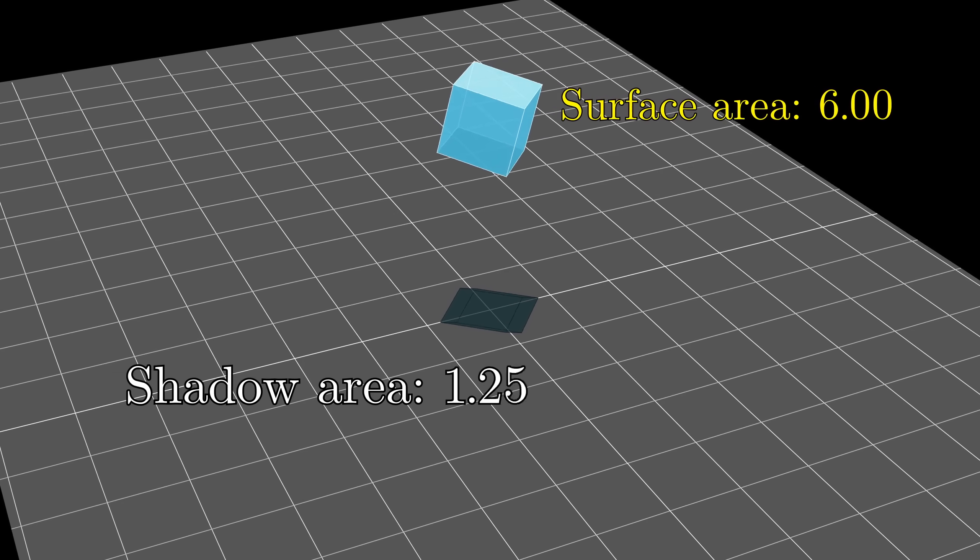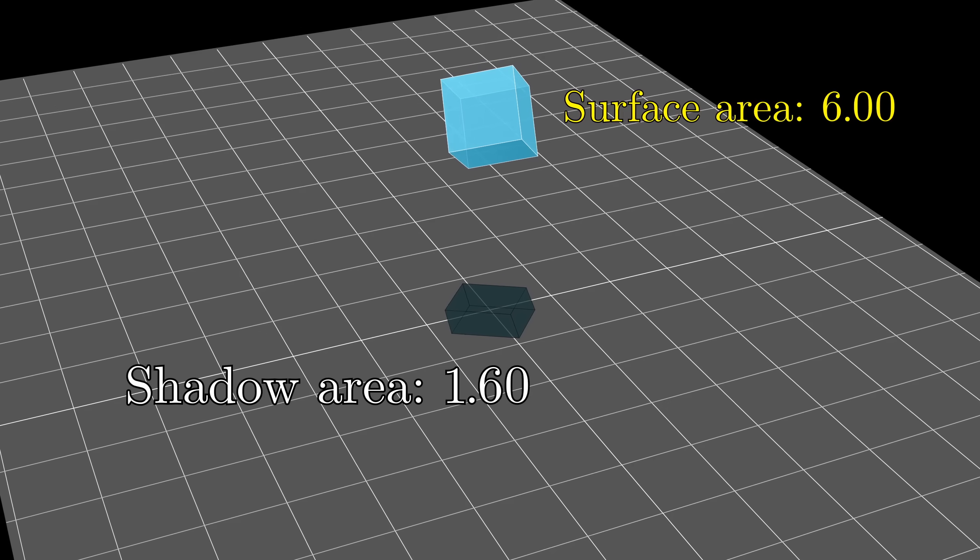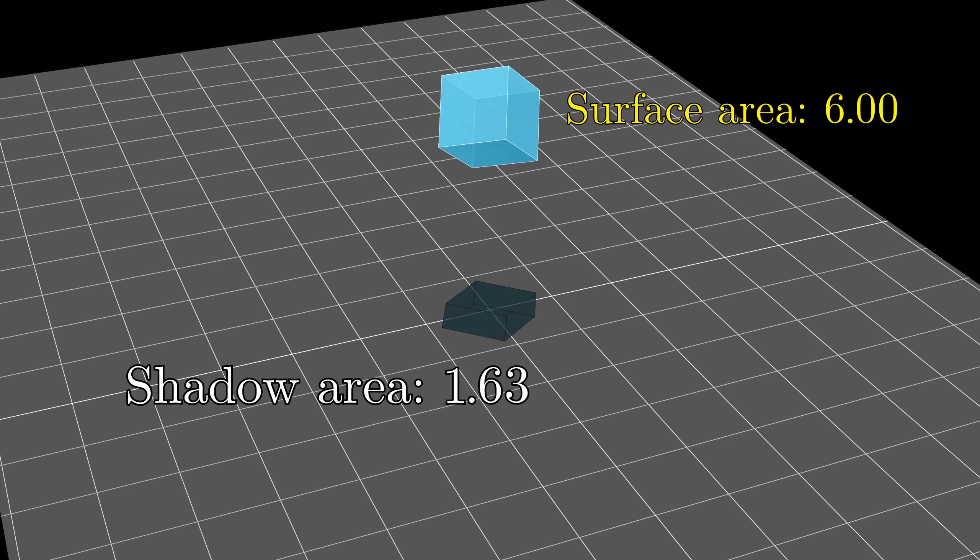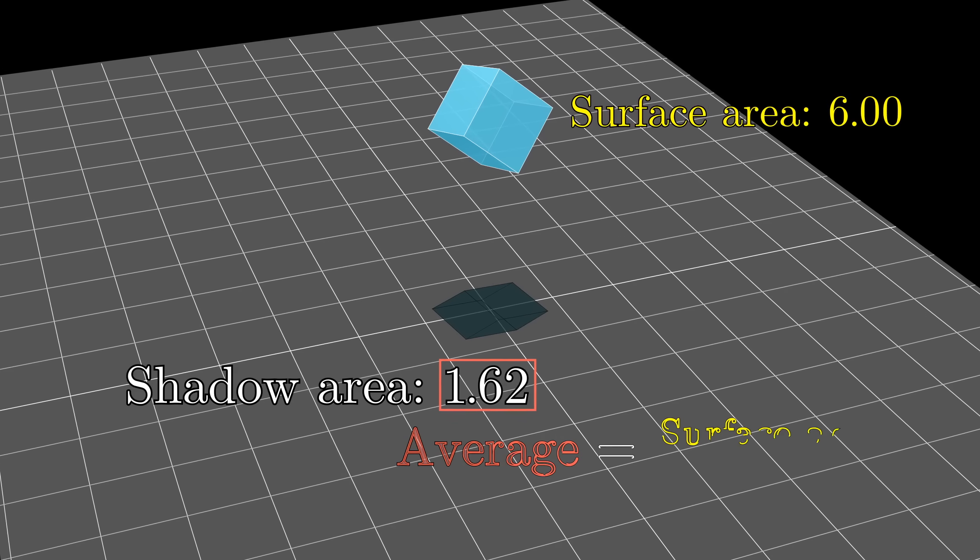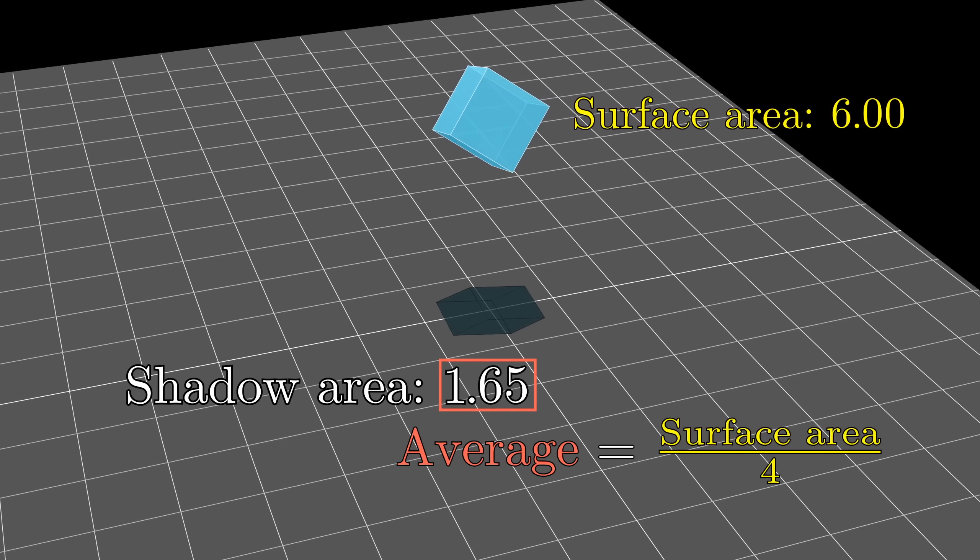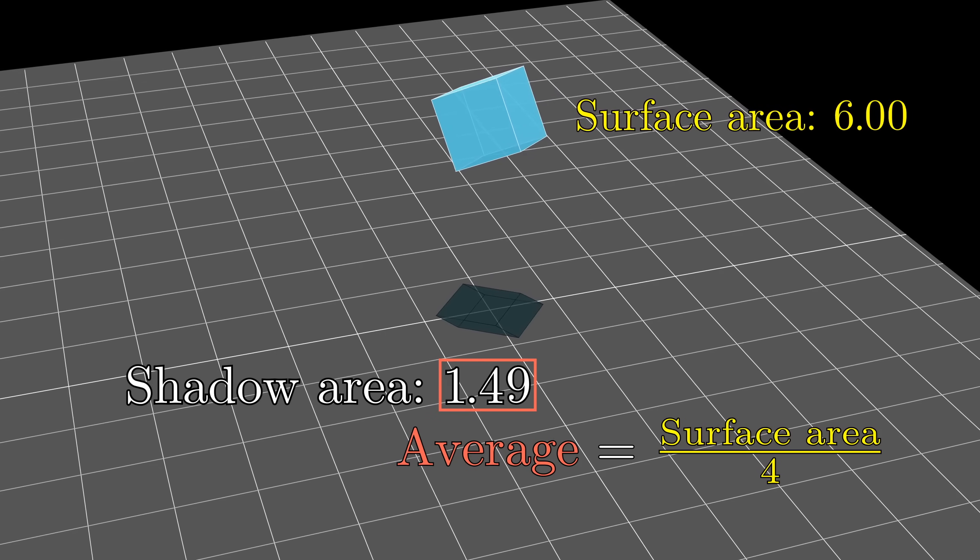If you take any convex shape and look at the average area of all of its shadows, averaged over all possible orientations in 3D space, that average will be exactly one-fourth the surface area of your shape.